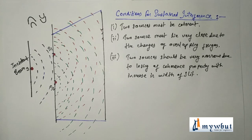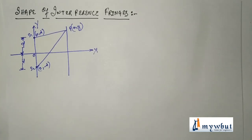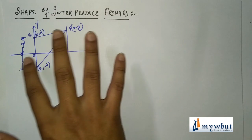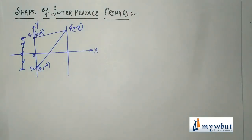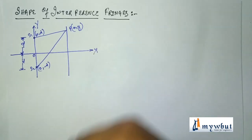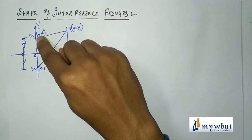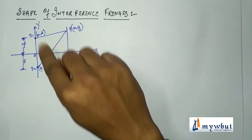Now let us derive the shape of interference fringes. This derivation is very important from the examination point of view. To derive the shape, we draw a schematic diagram in a coordinate system and assign distances and coordinates to the relevant points. We consider a coordinate system whose origin O is situated at the midpoint between the two coherent sources S1 and S2.